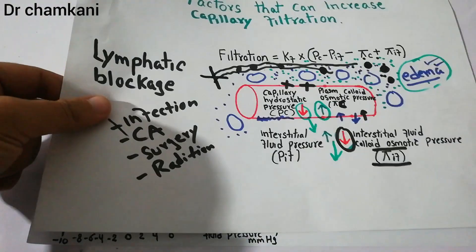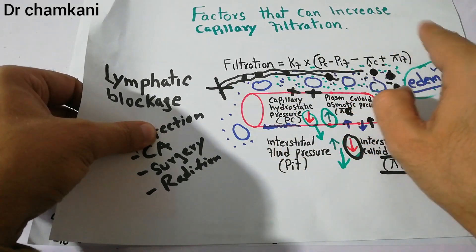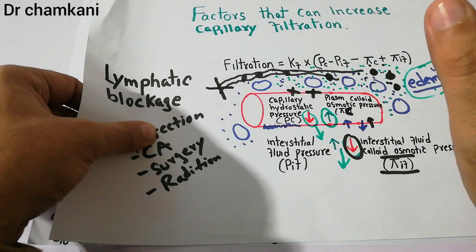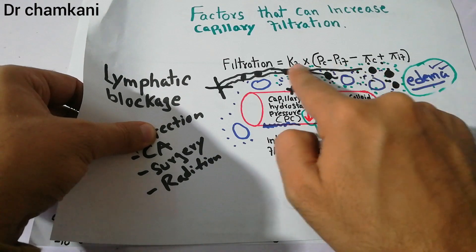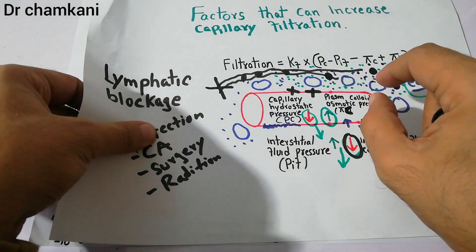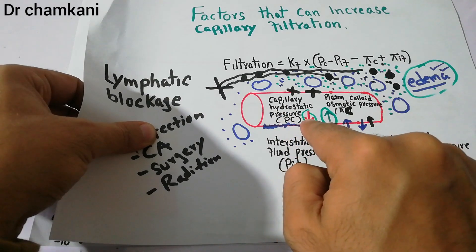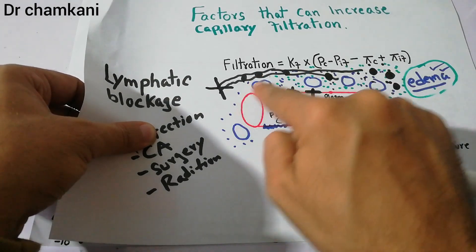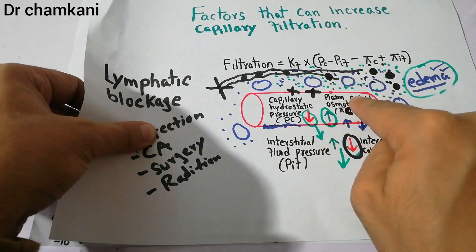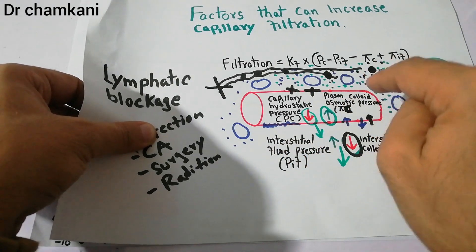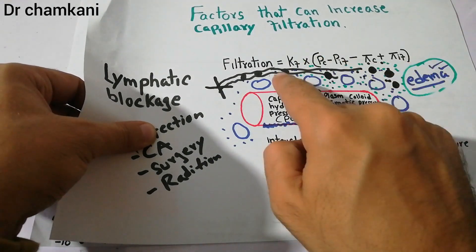At the capillary level, there are four main factors governing filtration. Capillary hydrostatic pressure pushes plasma out into the interstitium. Interstitial fluid pressure pushes fluid back into the capillary. Plasma colloid osmotic pressure pulls fluid into the capillary, and interstitial fluid colloid osmotic pressure pulls fluid out of the capillary into the interstitium.